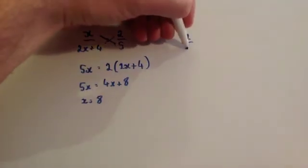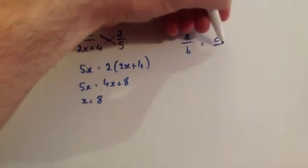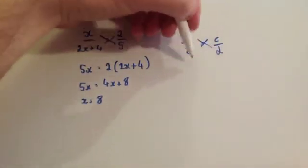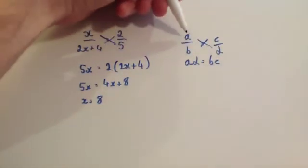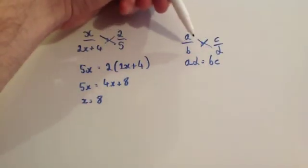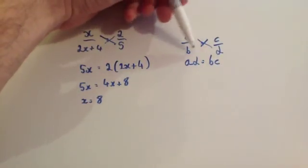So for instance, if you had a over b equals c over d, you would get a times d equals b times c. One numerator times the other denominator would be equal to the other numerator times the other denominator.